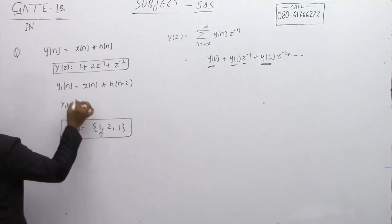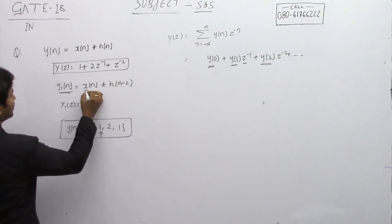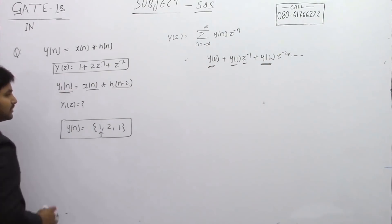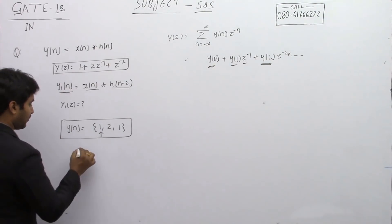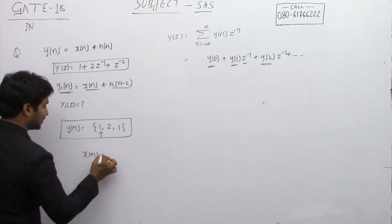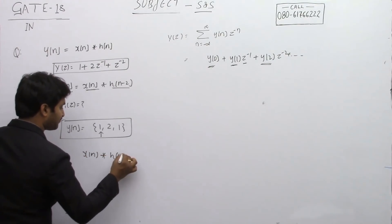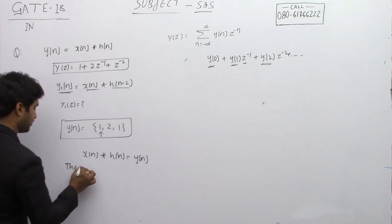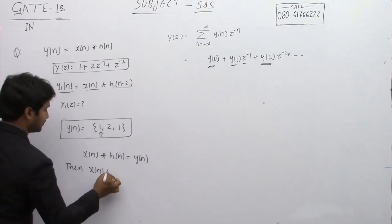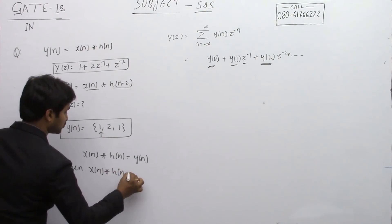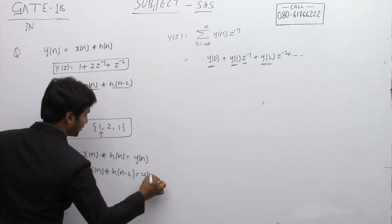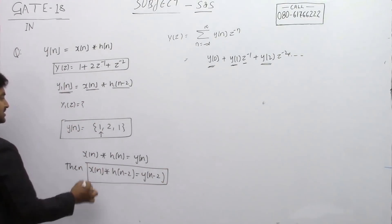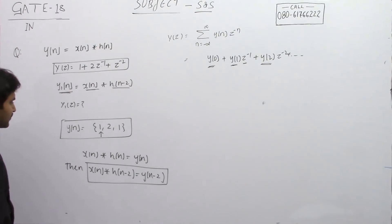What is given here is y1(n) equals x(n) convolved with h(n-2). Here we use a property of convolution: when x(n) convolved with h(n) equals y(n), then x(n) convolved with h(n-2) equals y(n-2). This is the time-shifting property of convolution.